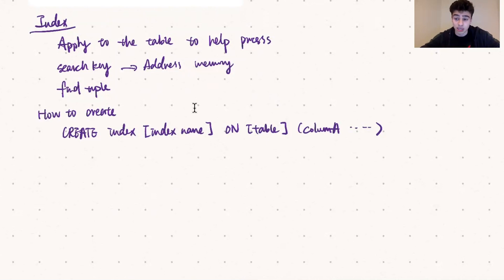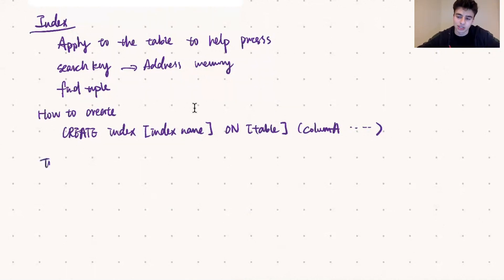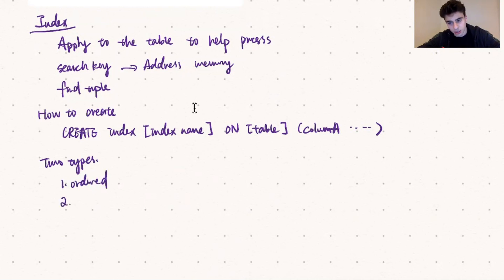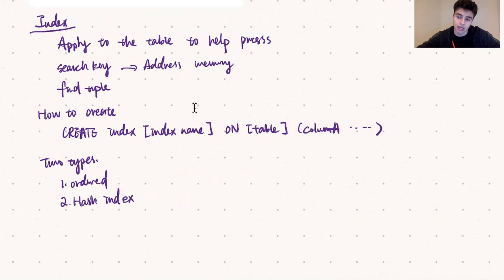To begin, there are two basic types of indexes: the ordered index versus the hash index. The ordered index is an index file where the index entries are sorted in the order of the search key. On the other hand, the hash index stores the index entries and data retrieval information using a hash table. In this video we're just going to be talking about the ordered index.